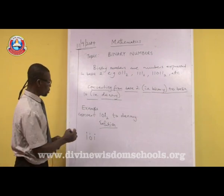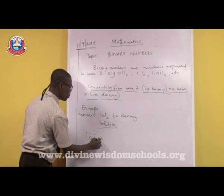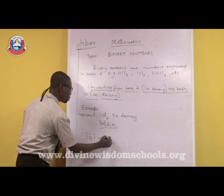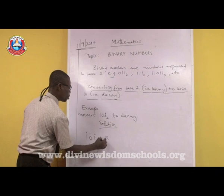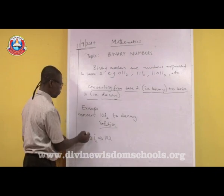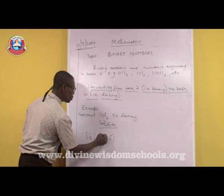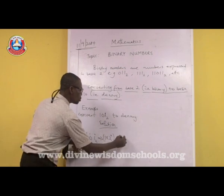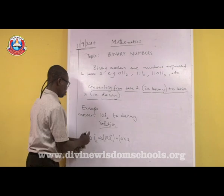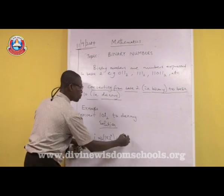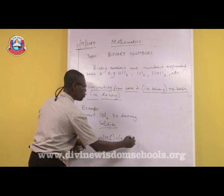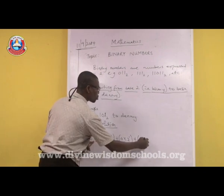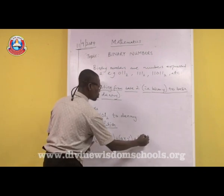If you are expressing it in base 10, it becomes: 1 times 2 raised to the power of 2, plus 0 times 2 raised to the power of 1, plus 1 times 2 raised to the power of 0.